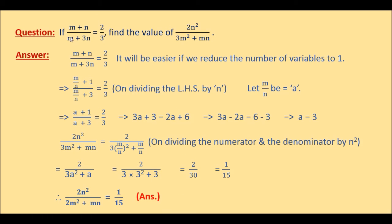Whenever you have expressions containing two variables but can form only a single linear equation from them, do not get worried. Just reduce the number of variables by dividing the numerator and the denominator — or the entire equation — by one of the variables. It may be the square of the variable as in this case with n squared. Depending on what type of expression it is, you decide what to divide by, but you must reduce the number of variables to 1. Otherwise it is not possible to find the numerical value of the given expression containing two variables.